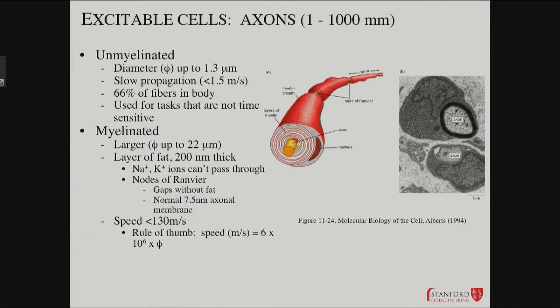An axon in cross section looks a bit like this. It's got the actual fiber coming from the cell, and then it's coated with this myelin structure, which is actually created by a support cell called a Schwann cell.